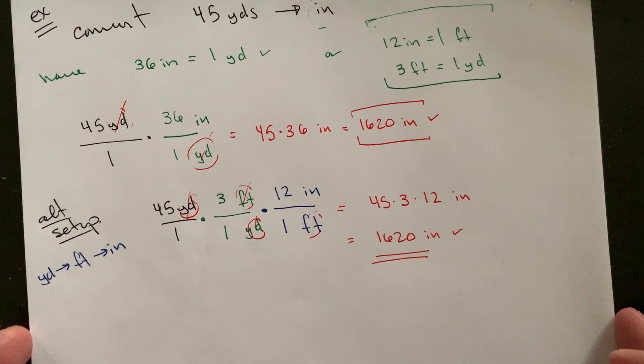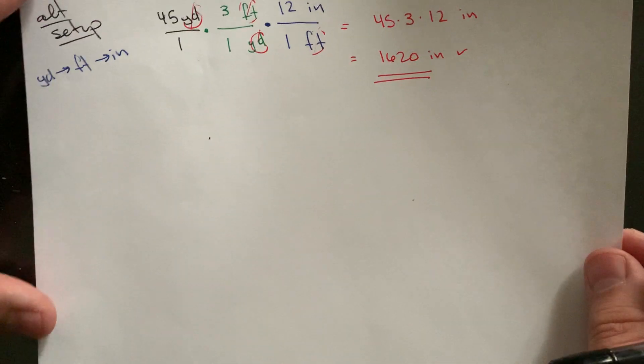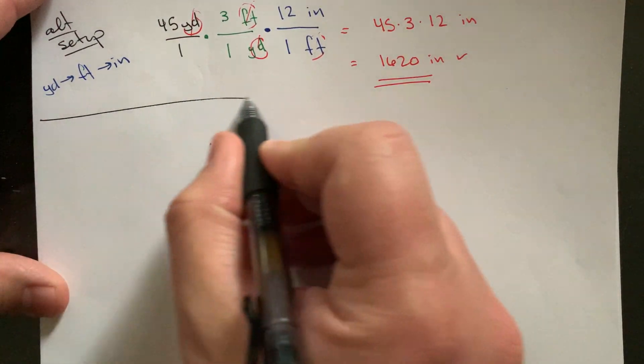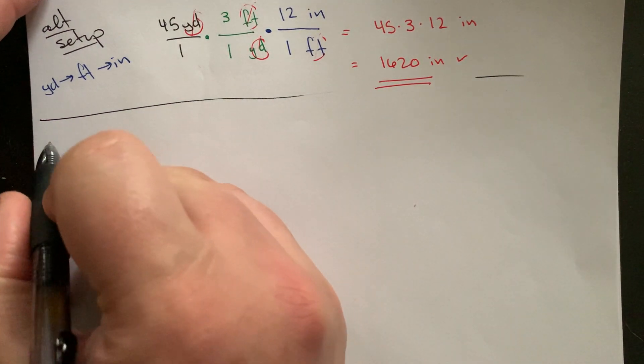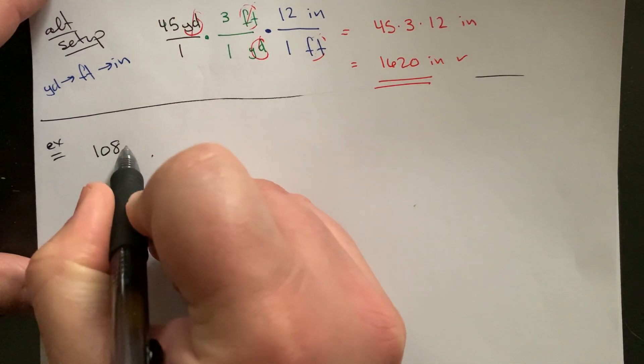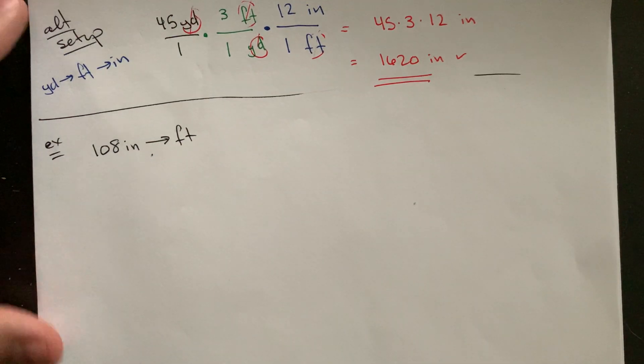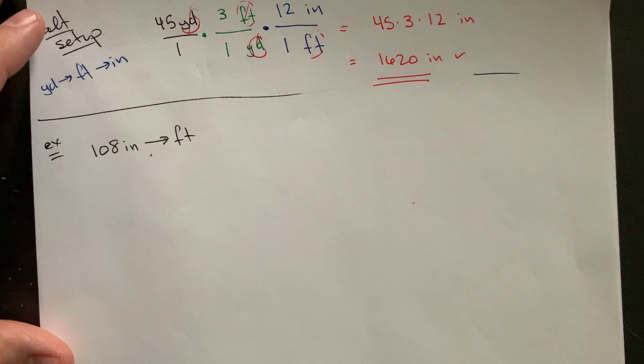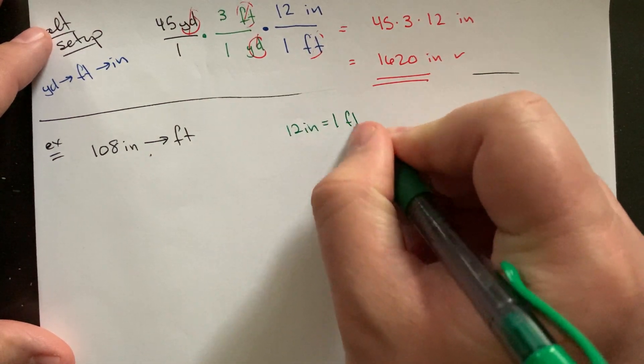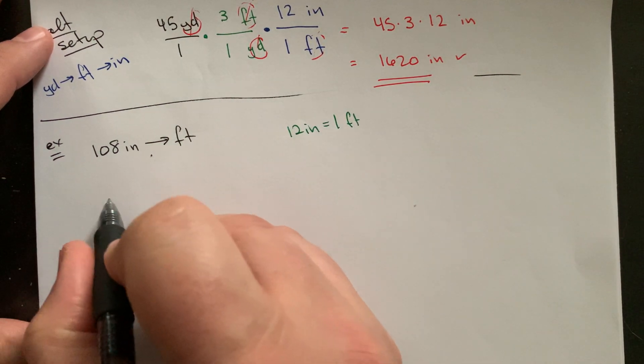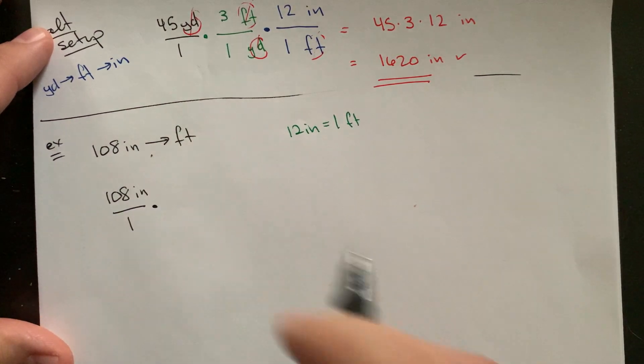Let's go one in the other direction. So that was converting from larger units, sort of feet and yards into inches, into a smaller unit. What if we ran this the other way instead? Let's do like 108 inches converted into feet. So we know the rates. We know it's 12 inches for every one foot.